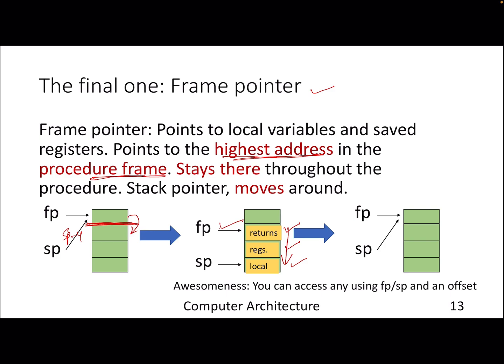Let's say F1 called F2, and during that time you've saved some registers, stored a return address, and have some local variables and arrays. Depending on the nested functions, the stack pointer may go up and down, but the frame pointer will remain fixed throughout until you are done with this procedure. The frame pointer is introduced to make the life of the compiler writer or programmer simpler. Even without it, a disciplined programmer can use the stack pointer and offsets to navigate and access all the data.